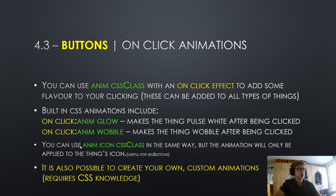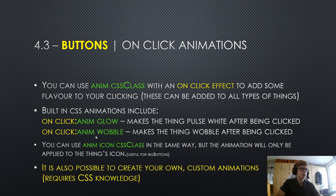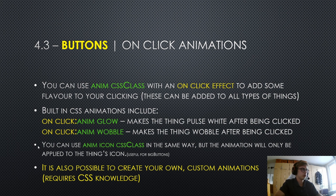It's also important to mention that you can use the anim icon CSS class in the same way, but the animation will only be applied to the thing's icon. For example, if you added an icon and used on-click anim icon wobble, that would only make the thing's icon wobble after being clicked. Hopefully that makes sense. It's also pretty important to mention that you can create your own custom animations, however this requires some CSS knowledge.